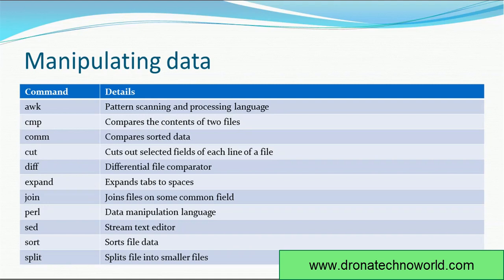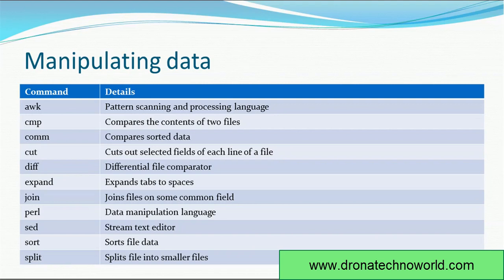Consider there are two files — text files, XML files, or any other kind — if you want to compare them, you can use the CMP command, which is very helpful in day-to-day activities. If you are comparing already-sorted data, then COMM (compare) is used for sorted data. The CUT command is used to cut out selected fields of each line in a given file. DIFF is another interesting command — a differential file comparator that compares two different files.